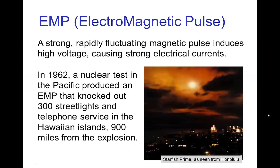Now, a more dramatic example of creating current using a fluctuating magnetic field is the so-called EMP, or electromagnetic pulse. If you have, say, a nuclear bomb in the atmosphere, there's a complicated process, but this can produce an intense, rapidly fluctuating magnetic pulse. The current induced by this EM pulse can be so large that it can actually knock out circuits, possibly by ohmic heating if the current is really large amperage. This happened in 1962 during a nuclear test. Even though the explosion was nine hundred miles away from Hawaii, it actually knocked out three hundred street lights and telephone service.